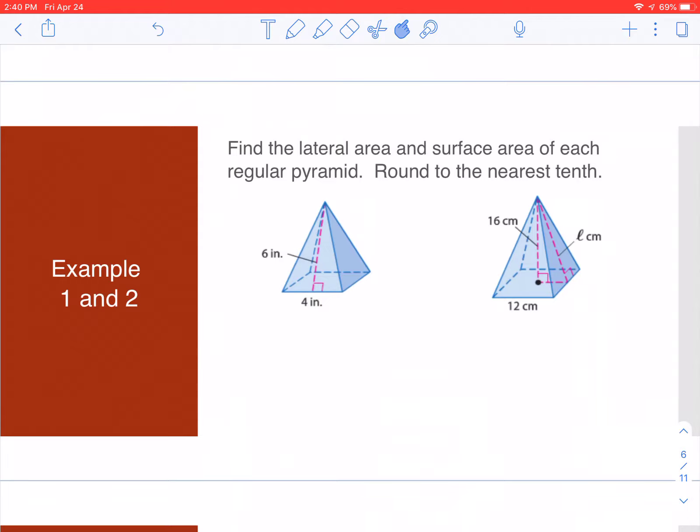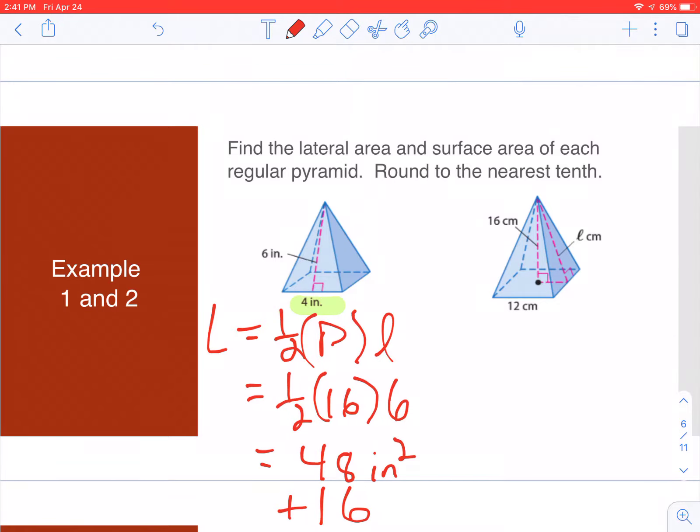Example one: lateral area equals one-half times perimeter. The perimeter is four times four, which is sixteen, because it's a regular pyramid. One-half times sixteen times the slant height of six equals 48 square inches. Adding the area of the base, which is sixteen, equals 64 square inches. That's the basic problem.